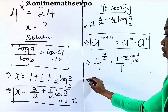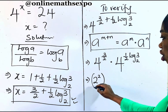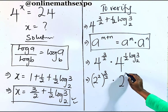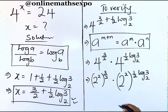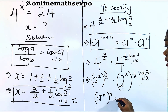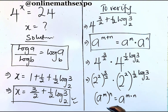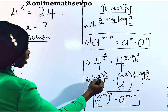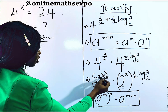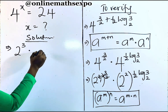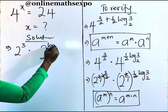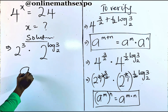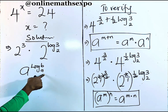Now remember, 4 is the same as 2 squared, raised to the power of 3/2. For every a^m raised to the power of n, it is always a^(m×n). So applying this rule: 2 squared to the power of 3/2 gives 2^3. Similarly, 4 to the power of ½·log₂3 becomes 2 squared to the power of ½·log₂3, which simplifies to 2^(log₂3). For every a to the power of log base a of b, the result equals b — so 2^(log₂3) equals 3.